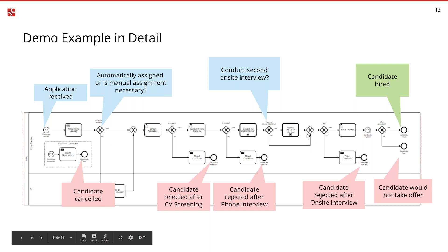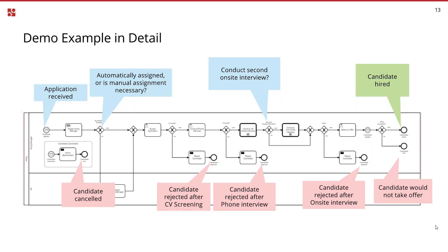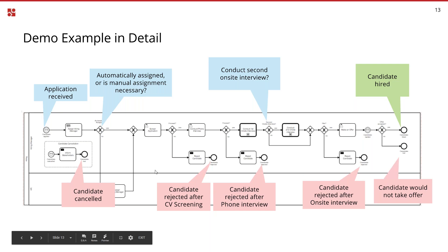Eventually we need to decide whether to hire the candidate or reject them. If we want to hire, we make an offer — possibly including negotiations — and eventually we get a message that the candidate has either accepted or not, resulting in a successful hire or not. Looking at the performance of this process, it's a bit like a funnel: things come in on the left-hand side, the intended outcome is on the right-hand side, and there's a lot that can go wrong from a business point of view in between.